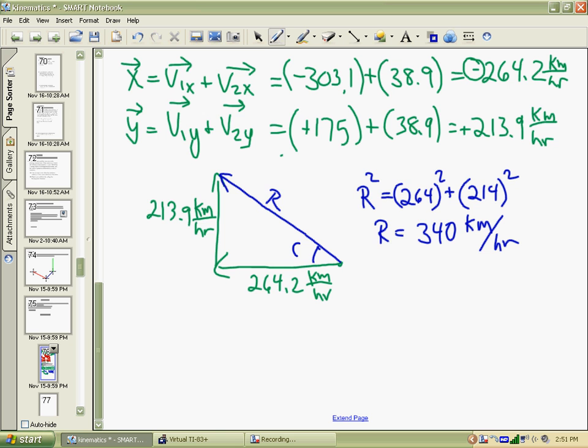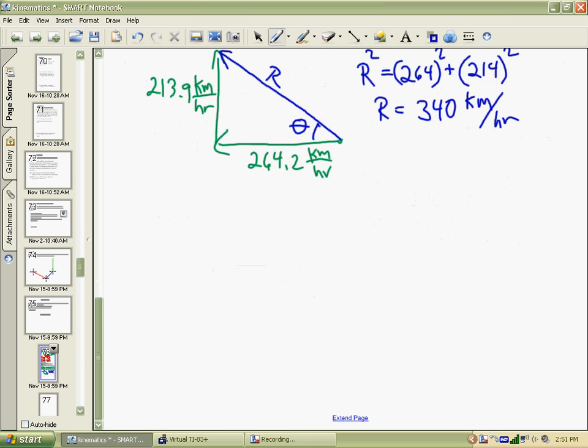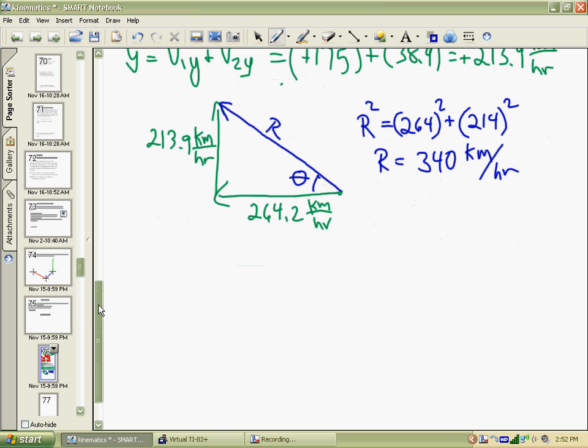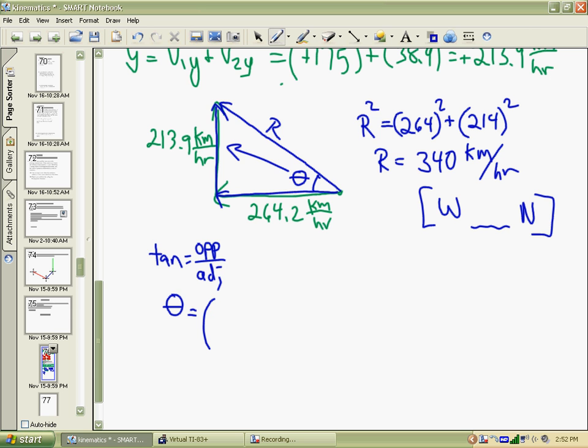We also have to give it a direction theta. So we're at our last step now to get the direction. We know that we went in the western direction first and then went north. So our convention will put west, then north. But we need to know what the angle was. To get the angle, I'll rely on the fact that tangent is opposite over adjacent. That means I will take the opposite side, 213.9, and divide by the adjacent side, 264.2.